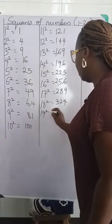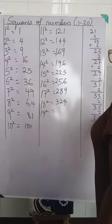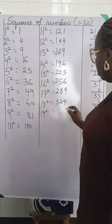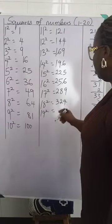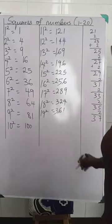Then 19 squared, we're going to have plus 2 here, which is 37. 7 plus 4 is 11. You write here 1 and carry 1. Put it here, which is 4. 4 plus 2 is 6. And we bring down our 3. 361.